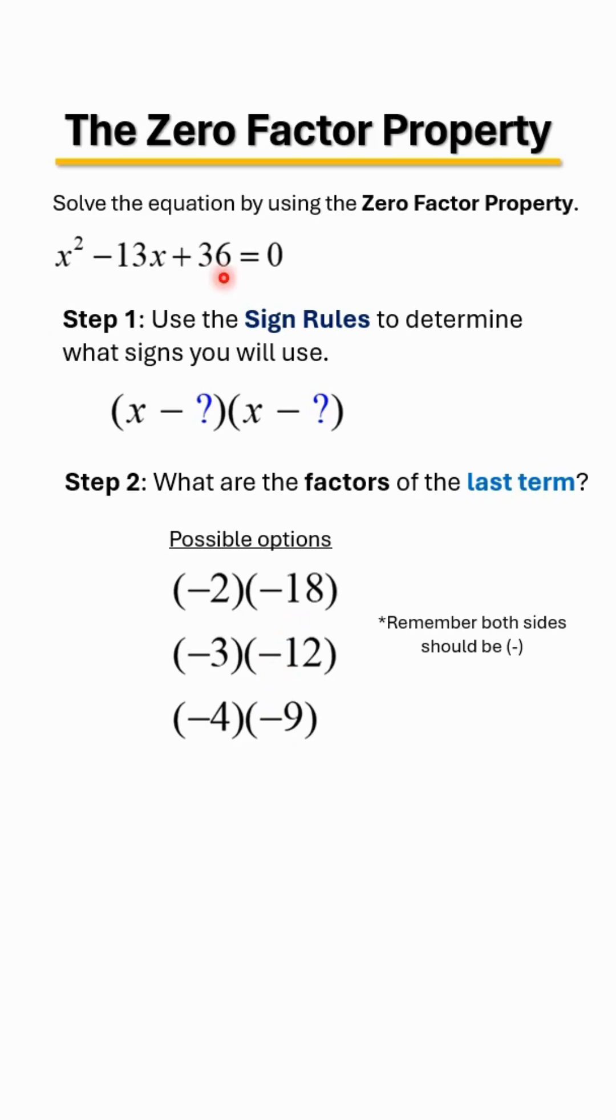...and when you add it is going to equal your middle term of negative 13x. So as you can guess, yes it is the last option which is a negative four and a negative nine. So let's go ahead and factor it now.